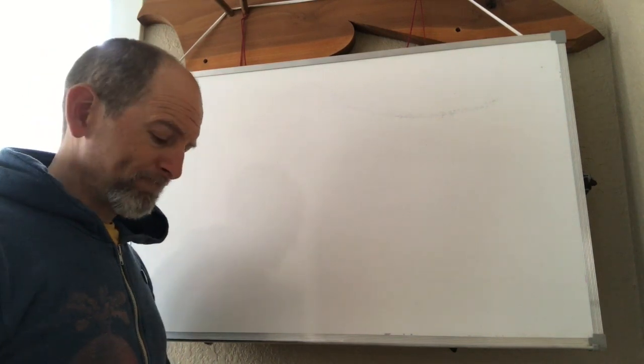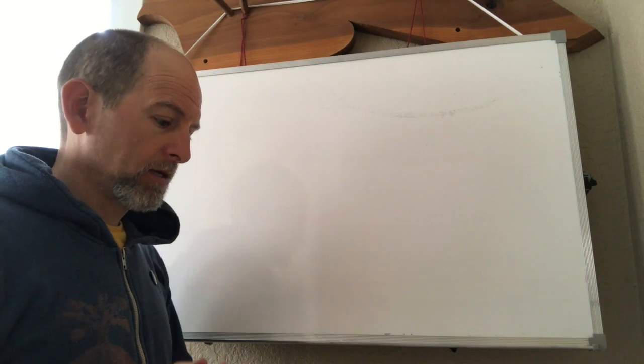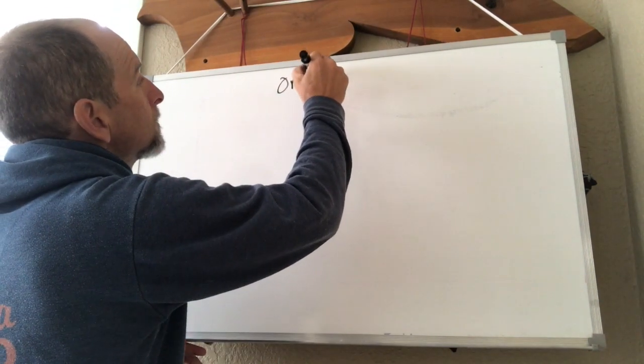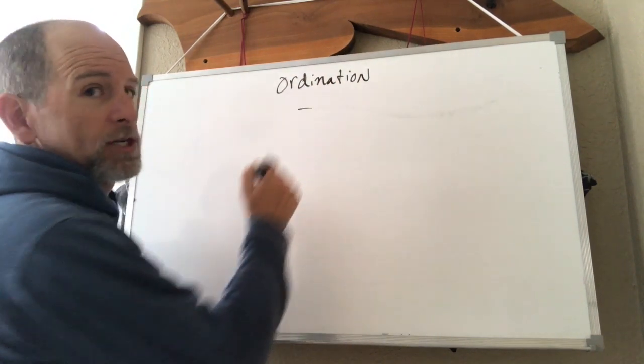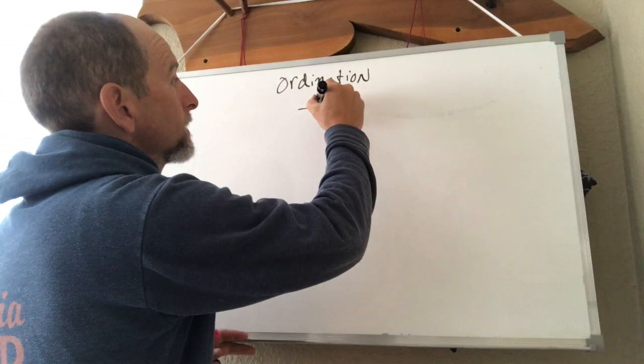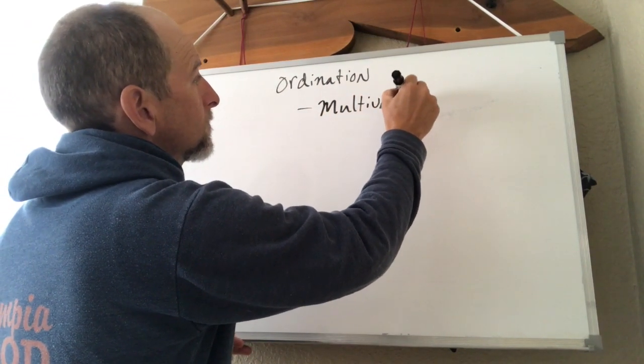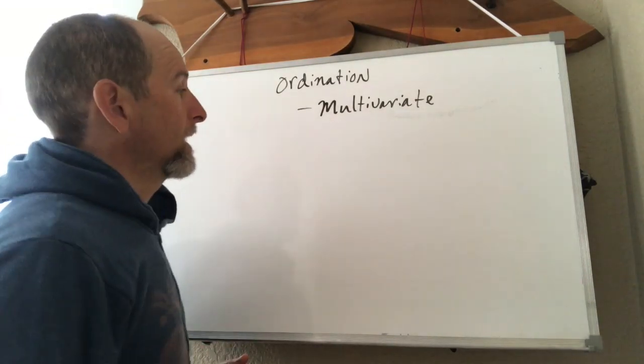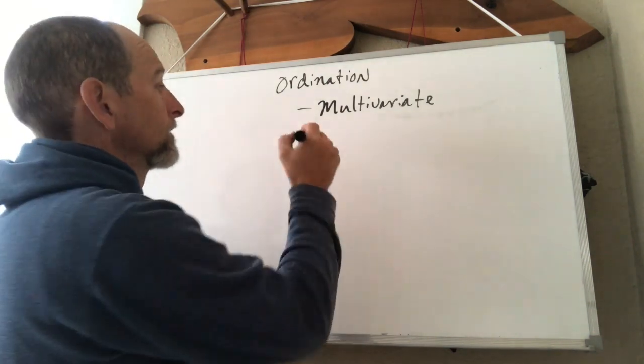So let's talk about communities. We're going to talk about how to analyze communities in an ordination. And ordination is what we call a multivariate data analysis approach, and we call it this way because there are multiple Y values.